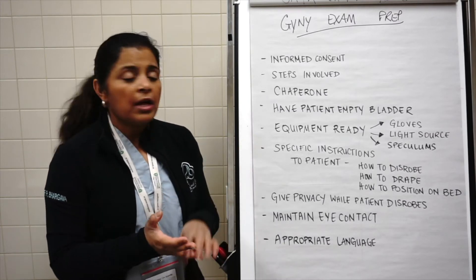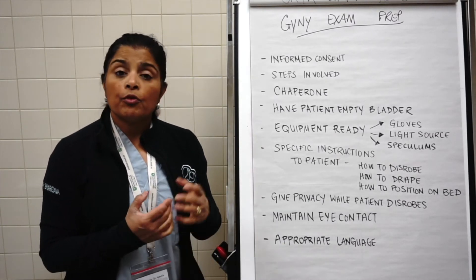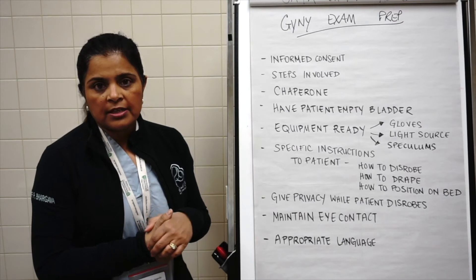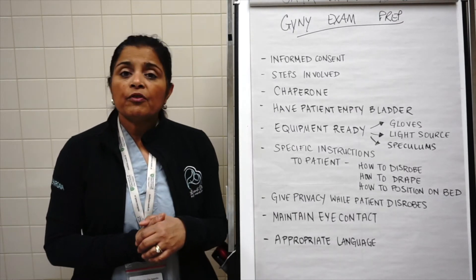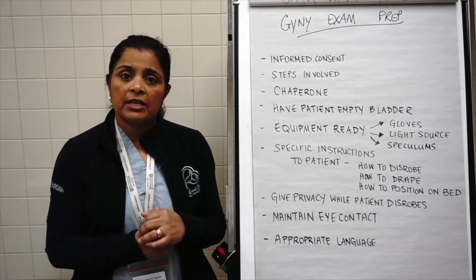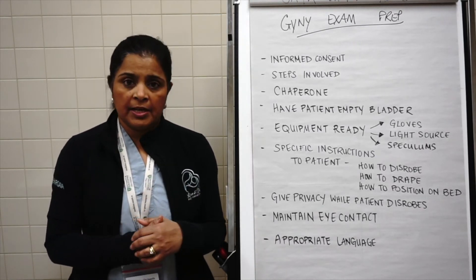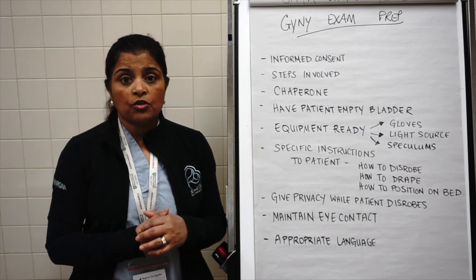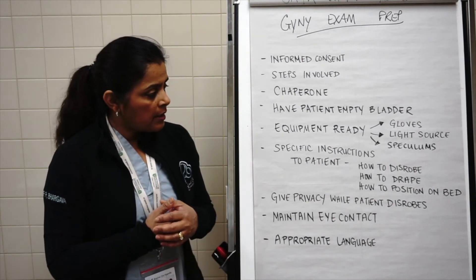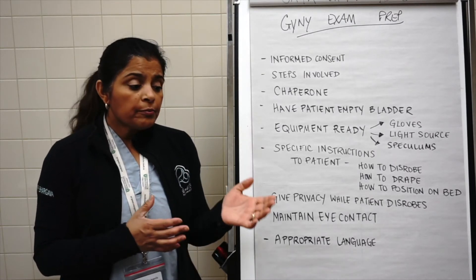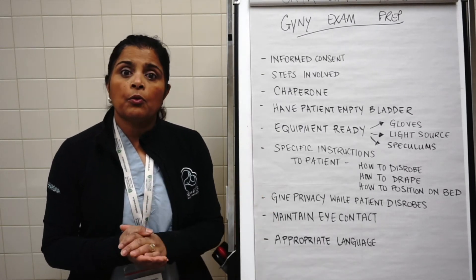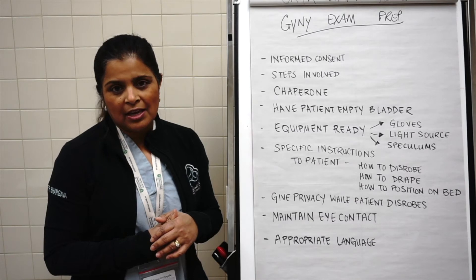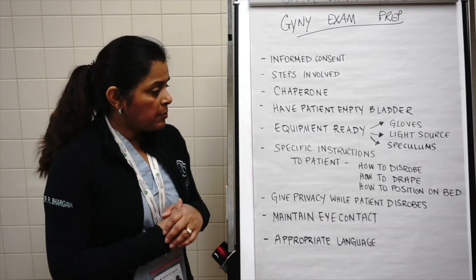Have your gloves available, a light source, and a speculum. The room should be clean, warm, and well lit to provide comfort for the patient. Be very specific about the instructions you give the patient before the examination — for example, let them know what clothing to remove, how to put on the drape to cover themselves properly, and what position to be in when you come back into the room. It's very important to give the patient privacy while they disrobe, drape, and position themselves.